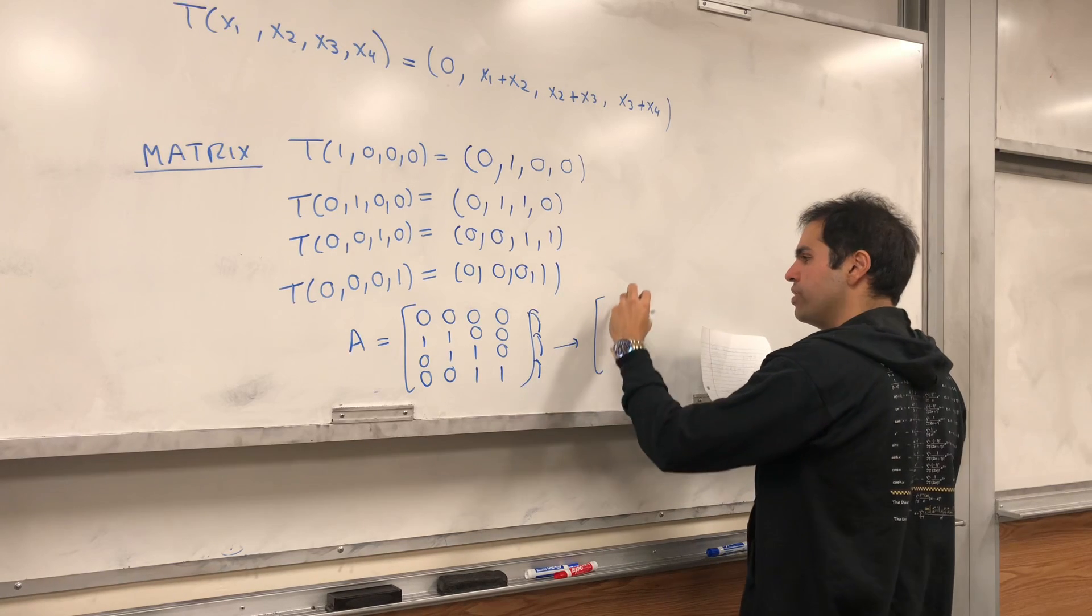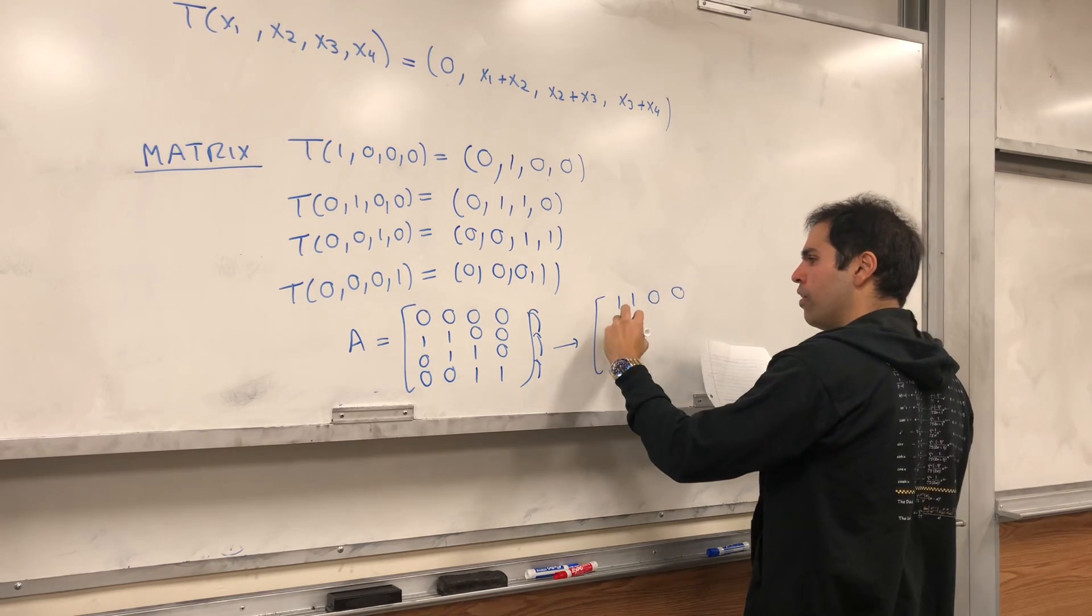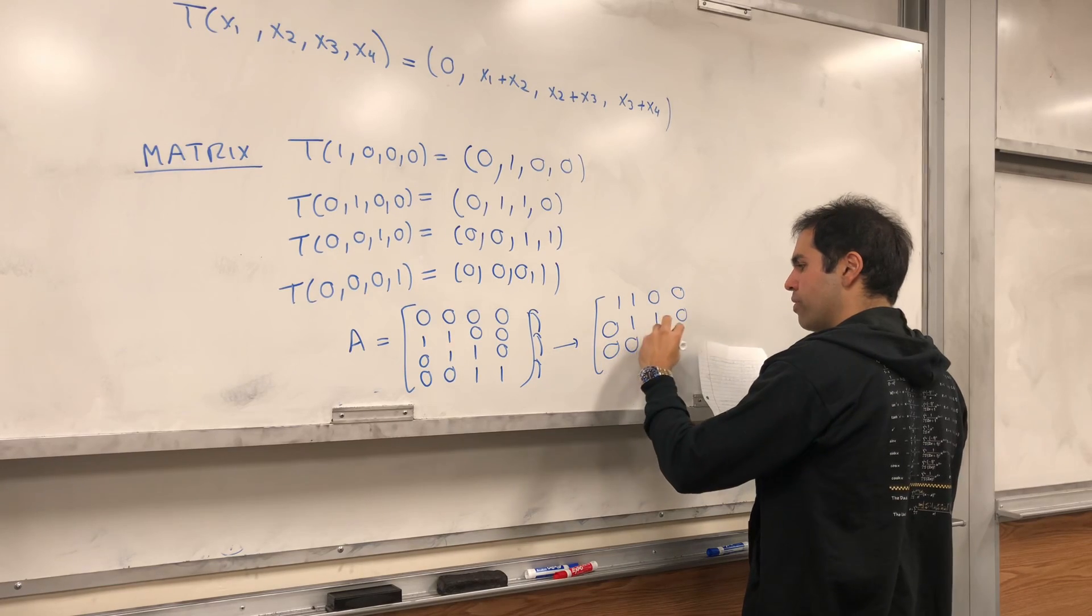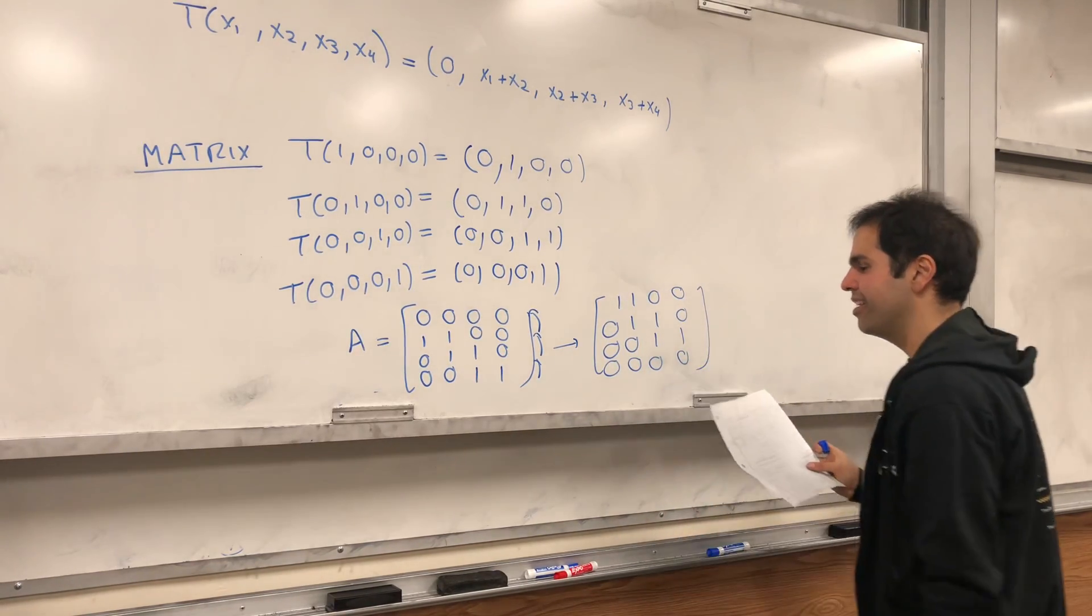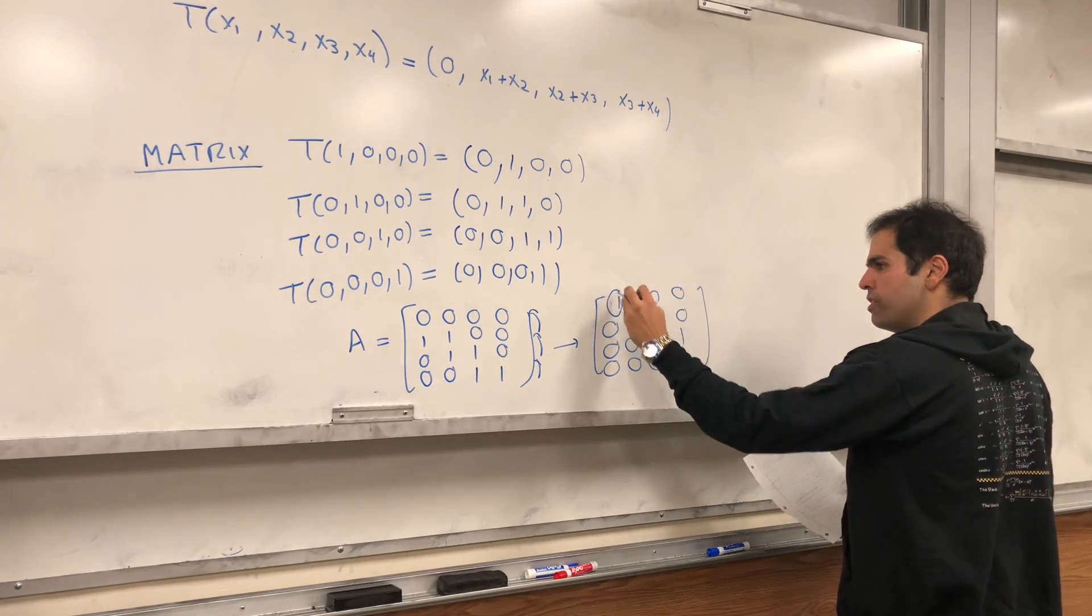So if you row reduce, you get 1,1,0,0, 0,1,1,0, 0,0,1,1, 0,0,0,0. And notice there are three pivots.